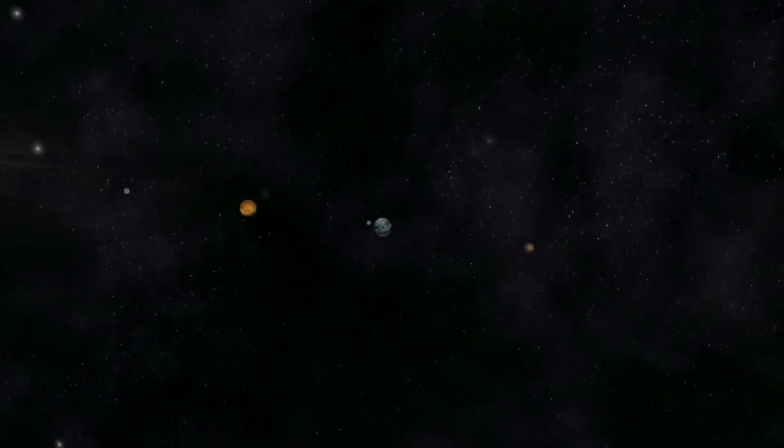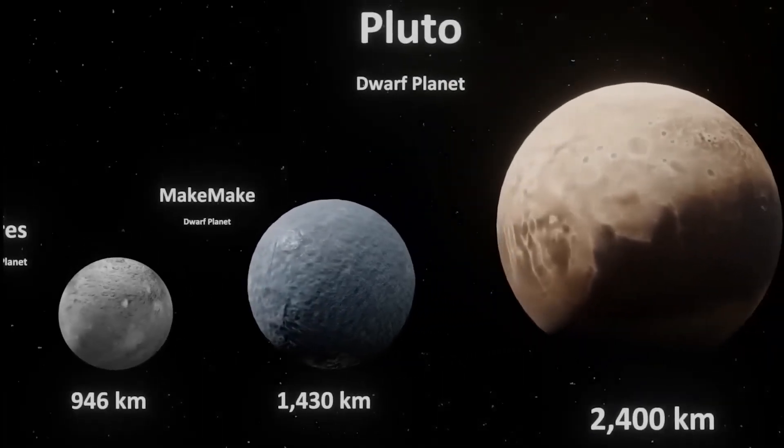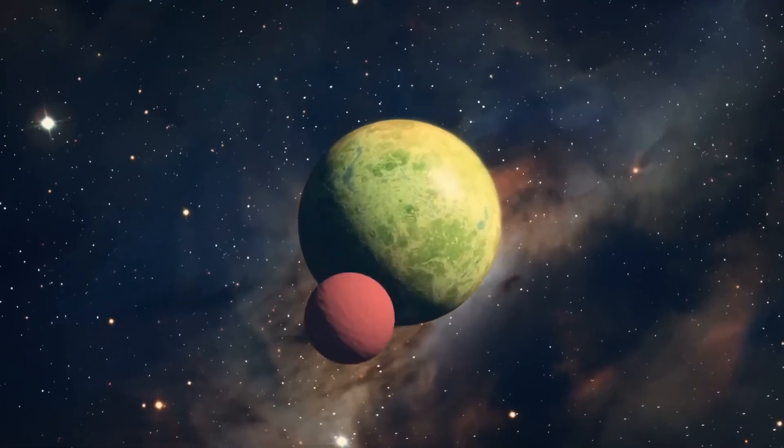Beyond Neptune lies the region of the solar system known as the Kuiper Belt, which is home to many icy bodies, including Pluto.